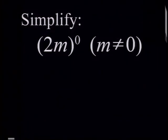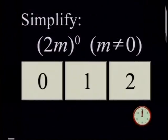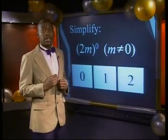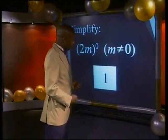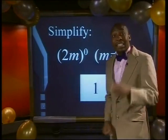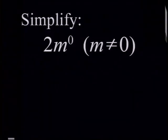Having fun? Take a close look at this one: 2m, all to the power of 0. Have you seen this before? Of course you have! Any number raised to the power of 0 is 1, so the answer for this one is 1.